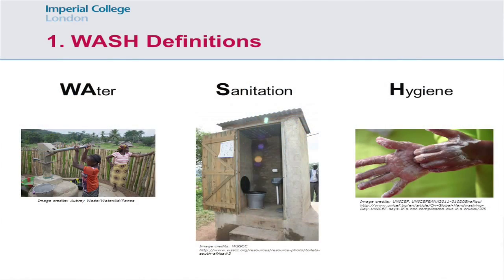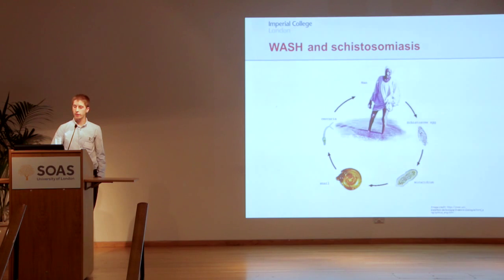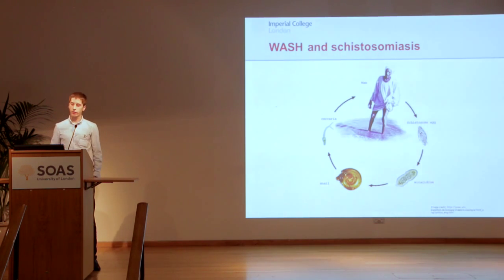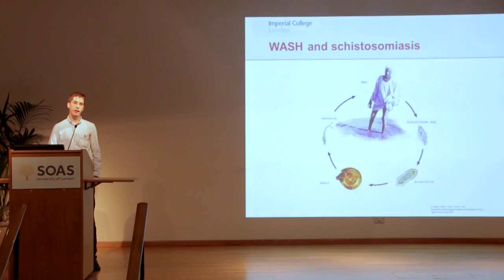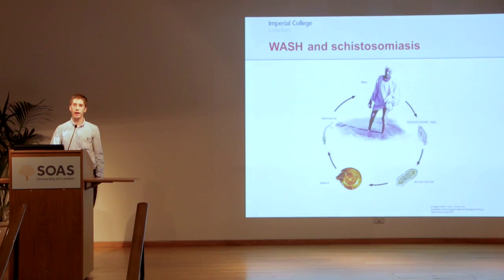WASH is water, sanitation, and hygiene. The schistosomiasis life cycle alternates between adult worms in the human hosts and snails — sporocysts in the snails. The adult worms lay eggs, which develop into miracidia in the fresh water. These then infect snails, and then the snails later release cercariae, which come back to infect more definitive hosts.